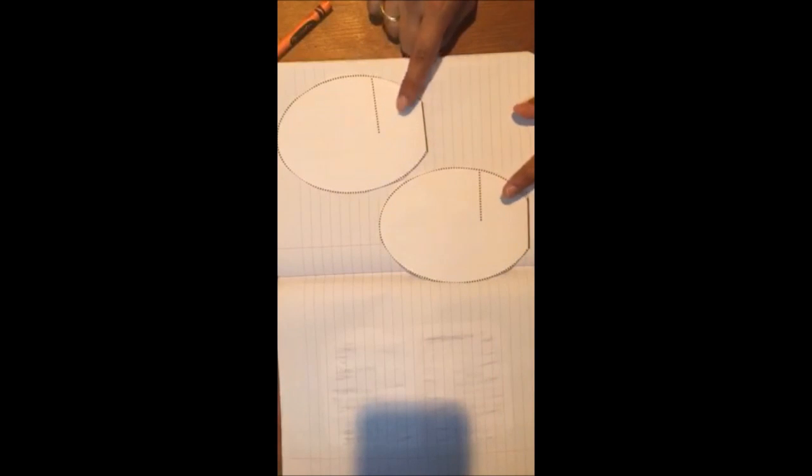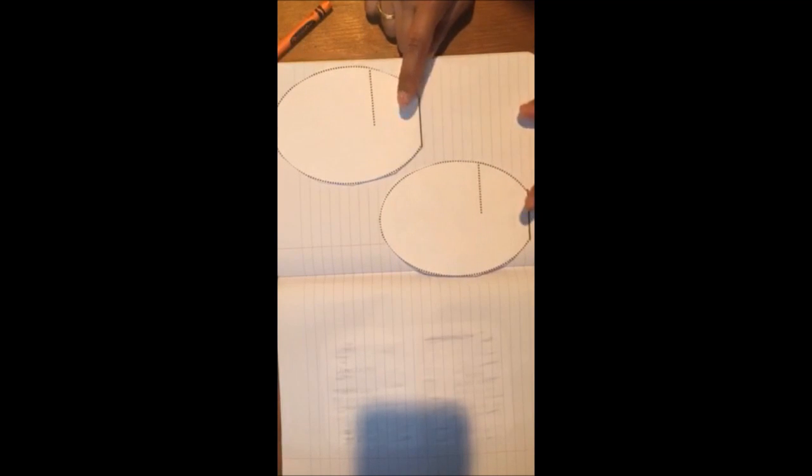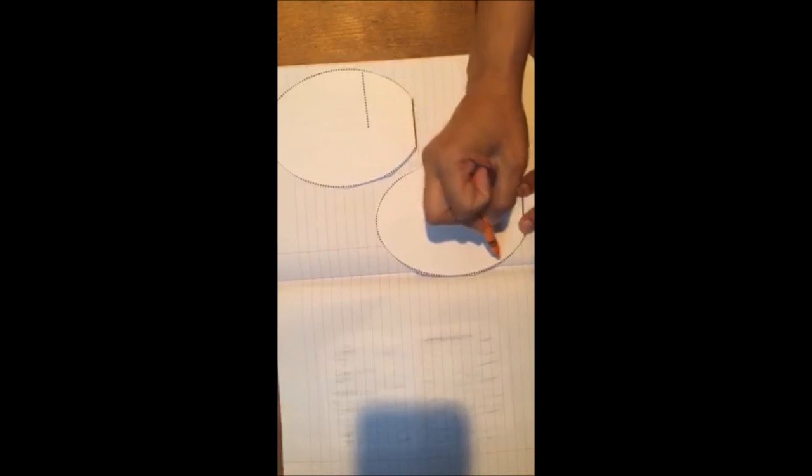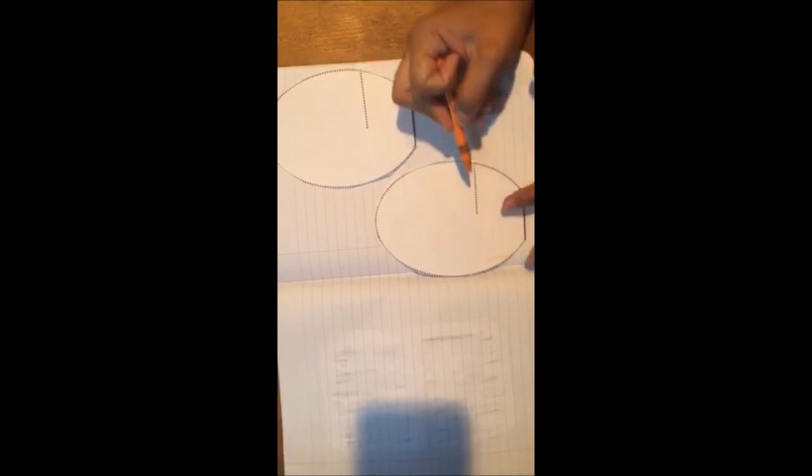Since we are creating a Venn diagram, these two pieces right here are actually going to be the two that show the areas that are the same, or things that they have in common.